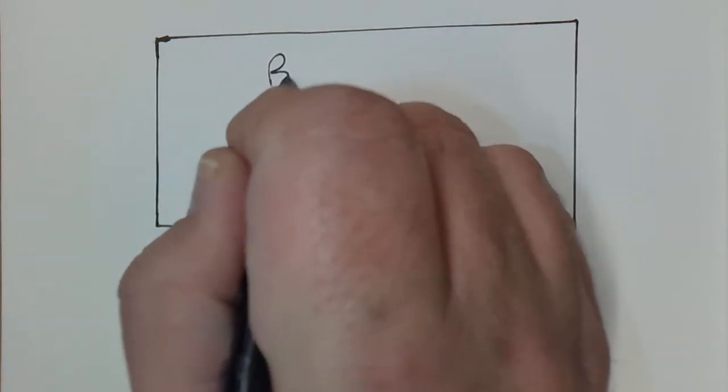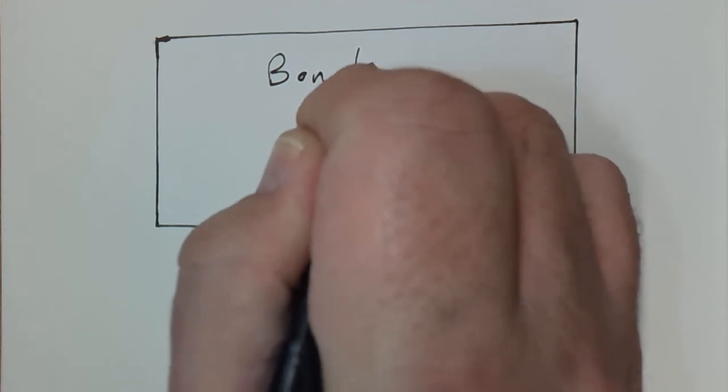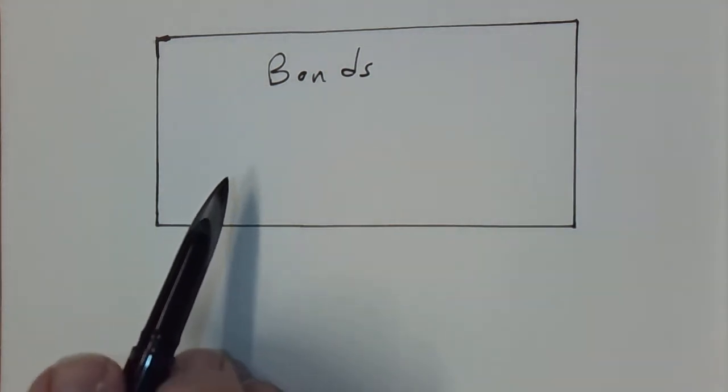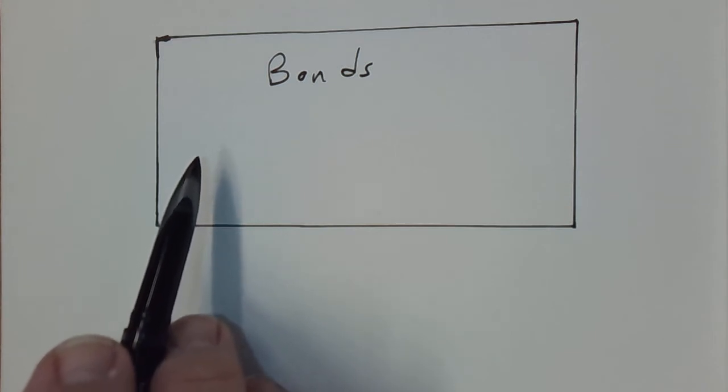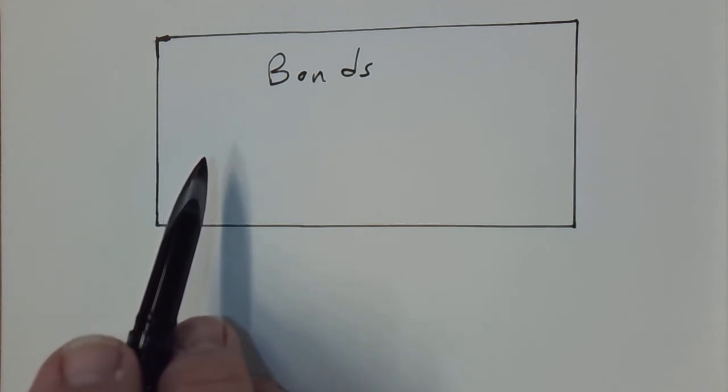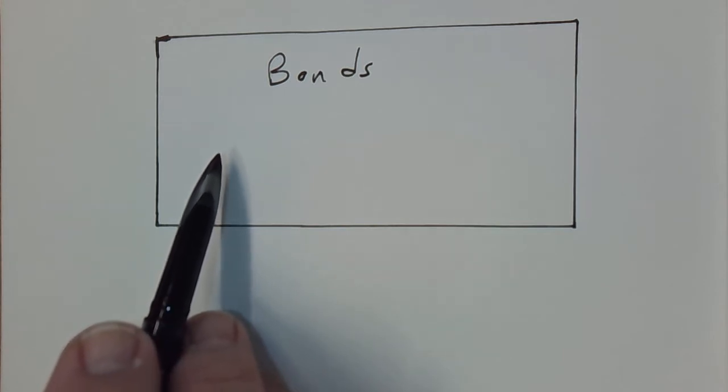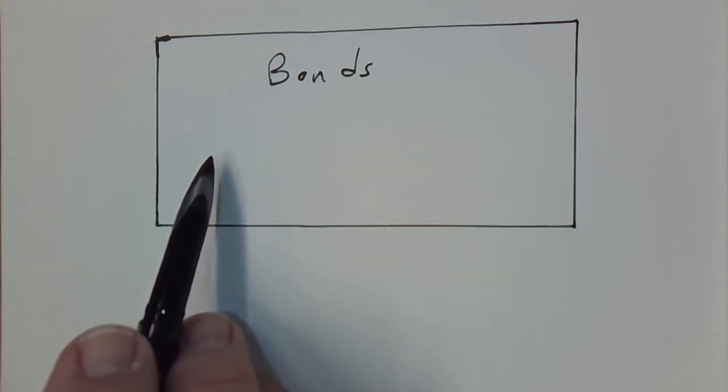Bonds are a way of borrowing money. Bonds are a way of evidencing who owns that debt. So if you've got maybe a project that you're trying to raise $10 million for, instead of going to one bank, they could issue bonds to investors and pay interest to those investors.